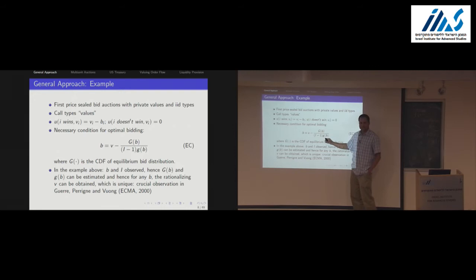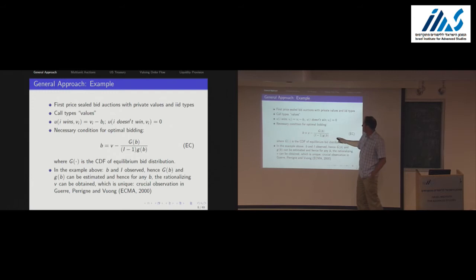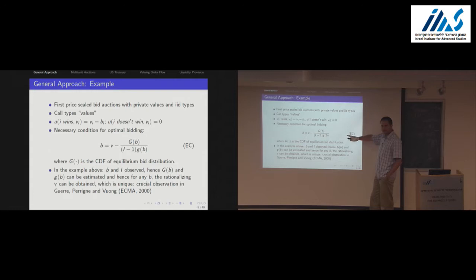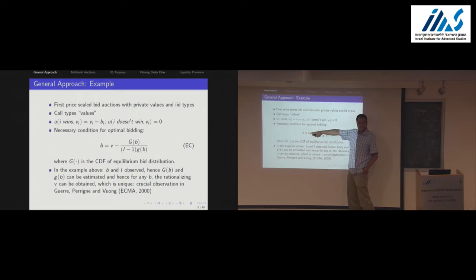This equation already embeds a lot of assumptions on the information structure. The nice monotone relationship is the crucial foundation for the famous Guerres-Perrigne-Vuong paper on nonparametric estimation of first-price auctions. The basic idea: you observe bids B and number of bidders I. You can put V on one side and everything else on the other side — and since you can estimate everything else nonparametrically, you get your V. Once you have V's for every B, you get your F of V. That's the basic idea of the Guerres-Perrigne-Vuong approach.